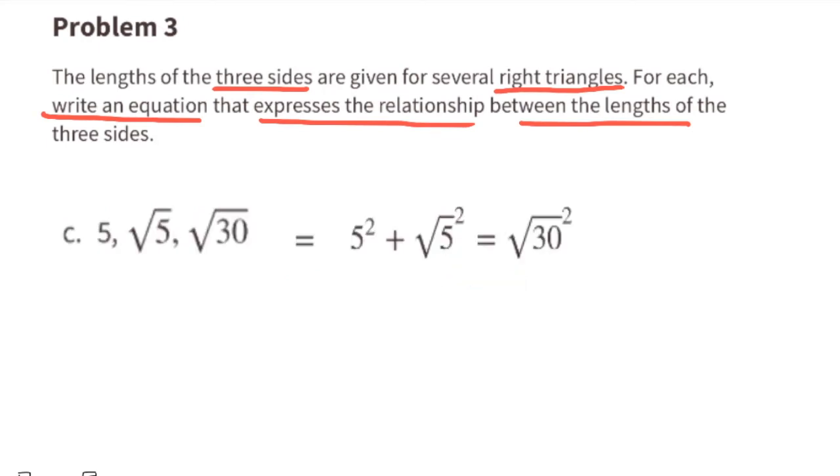C: Five squared plus the square root of five squared equals the square root of 30 squared. This relationship works because 25 plus five equals 30.